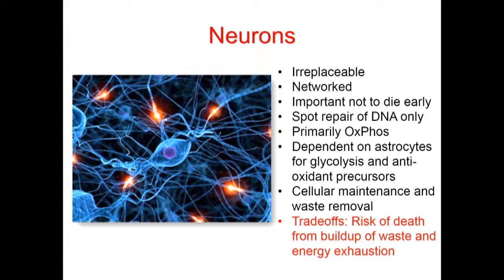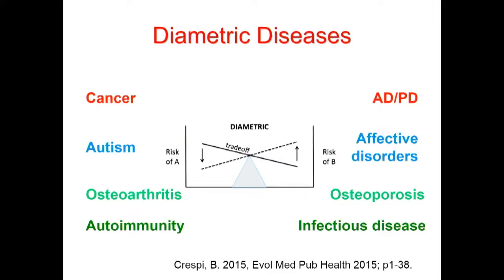What the neuron is really worried about is energy, cellular maintenance, and waste removal. So the trade-off here is that it's very vulnerable to the risk of death from energy exhaustion and from buildup of waste. Bernie Crespi sent me an article discussing these trade-offs that different cell types have made, and how it can cause a pattern of diametric disease — which I think we have in the case of cancer and neurodegeneration.